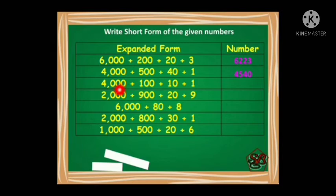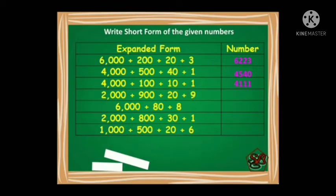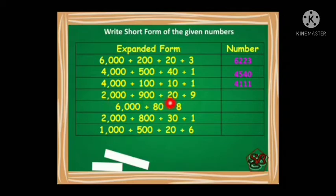Moving on: 4000 plus 900 plus 10 plus 1. Four in thousands place, 9 in hundreds place, 1 in tens place, and 1 in ones place — the number formed is 4111. Next, 2000 plus 900 plus 20 plus 9: 2 at thousands place, 9 at hundreds place, 2 at tens place, and 9 at ones place — the number formed is 2929.